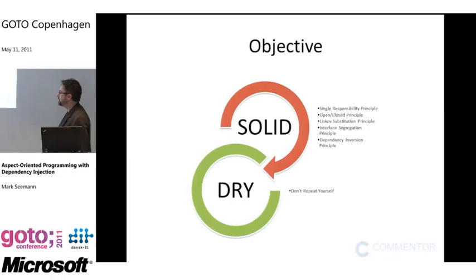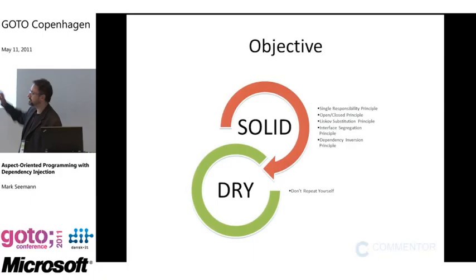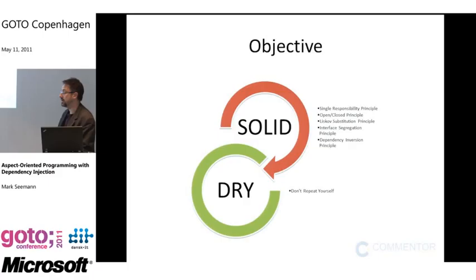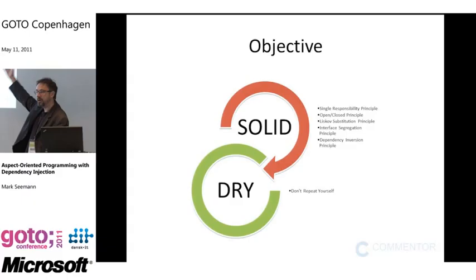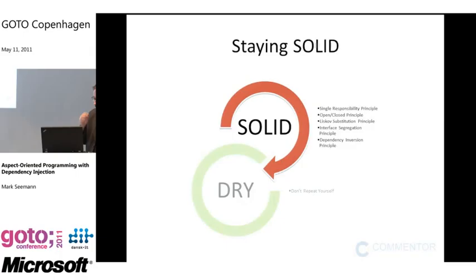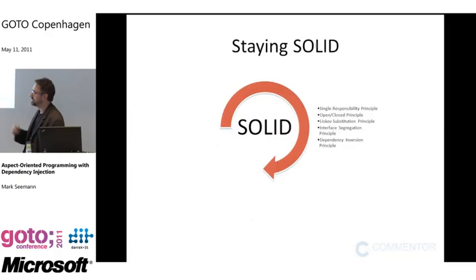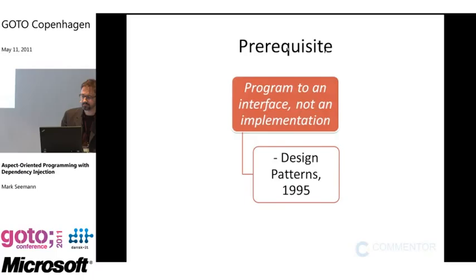One objective today is to implement cross-cutting concerns in a SOLID way. The other thing we want to do is address DRY — Don't Repeat Yourself. It turns out that staying DRY is actually the most difficult part. So I'll first talk about how we do AOP following SOLID principles, then add how we also stay DRY — because the first time around it won't be very DRY.